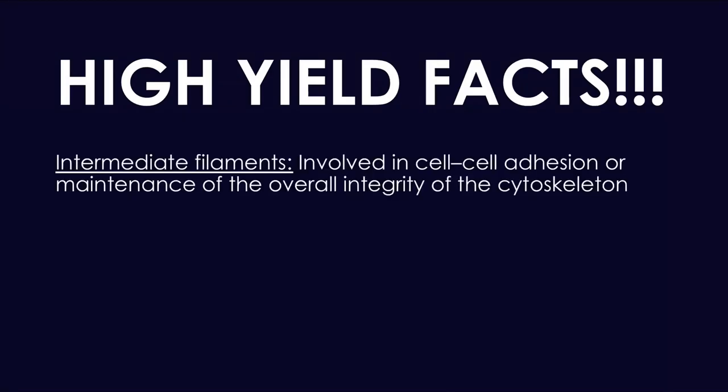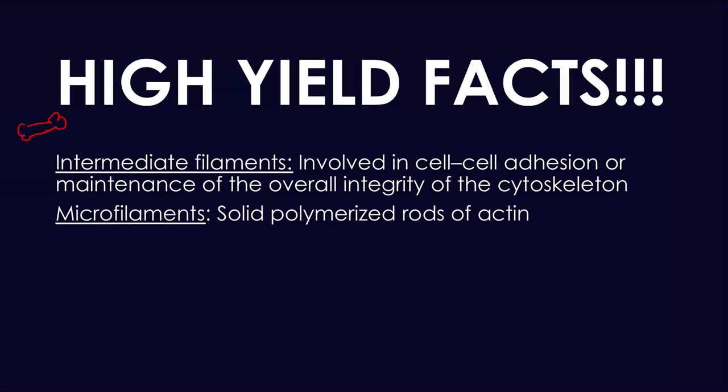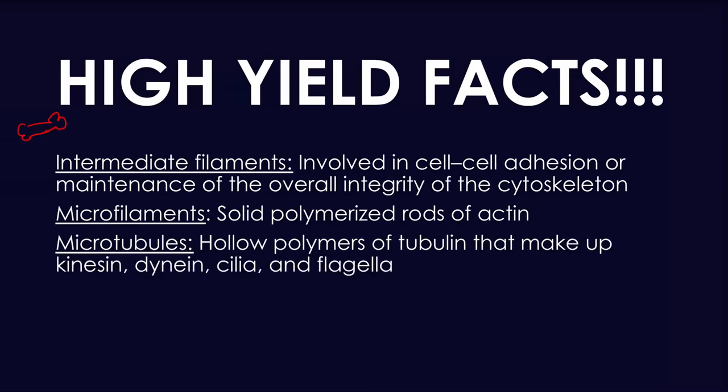The Golgi apparatus modifies, repackages, and shifts the contents from the endoplasmic reticulum to the target location. Intermediate filaments are like the bones of the cell — involved in cell-to-cell adhesion and maintenance of overall integrity. Microfilaments are solid polymerized rods of actin, and microtubules are hollow polymers of tubulin that make up kinesin, dynein, cilia, and flagella — very high yield to know.